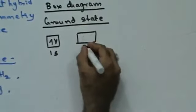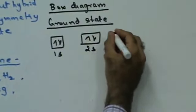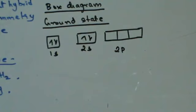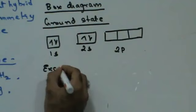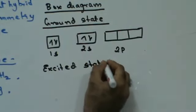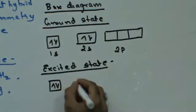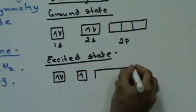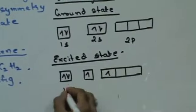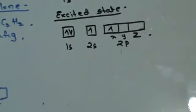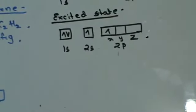Let's see the box diagram. Ground state: this is 1s, this is 2s, and this is 2p, which is completely empty. That's the ground state electronic configuration of beryllium. Will this go into the excited state? Yes — it has an empty orbital, therefore it will go into the excited state. The excited state will have electronic configuration of 1s, 2s, and 2px.